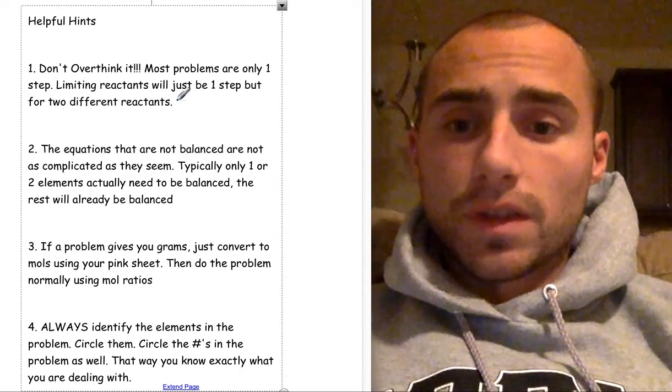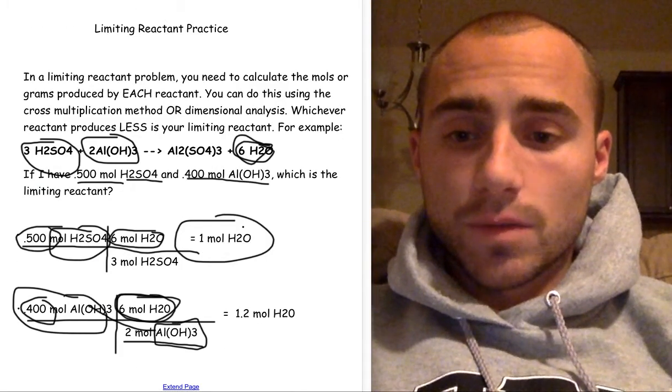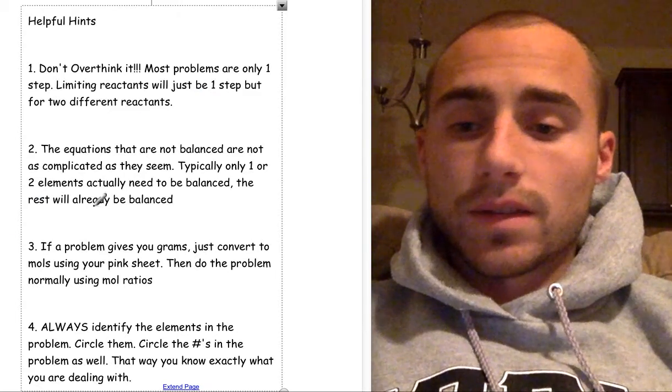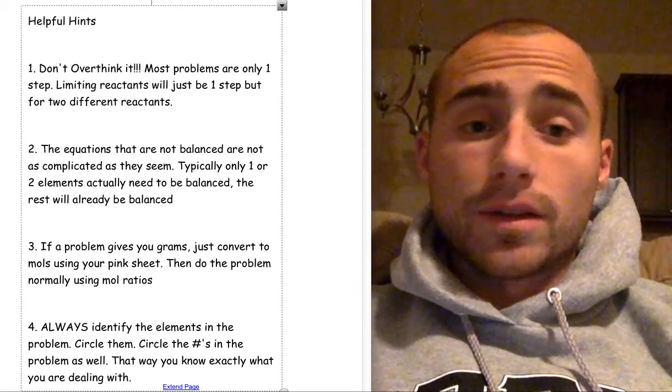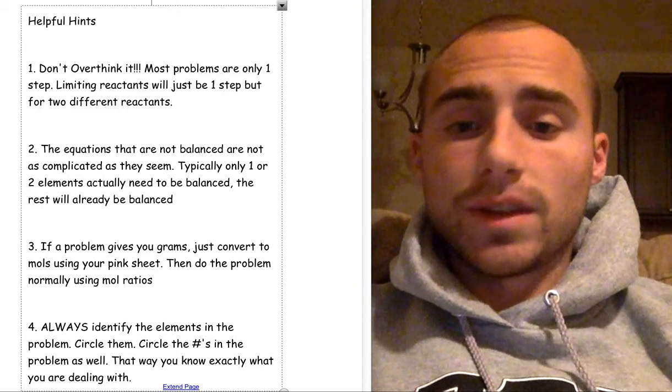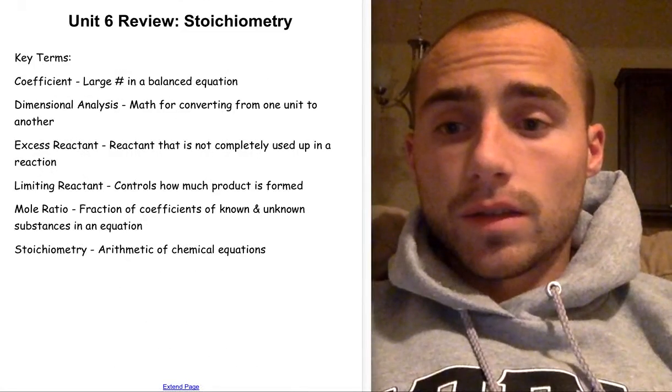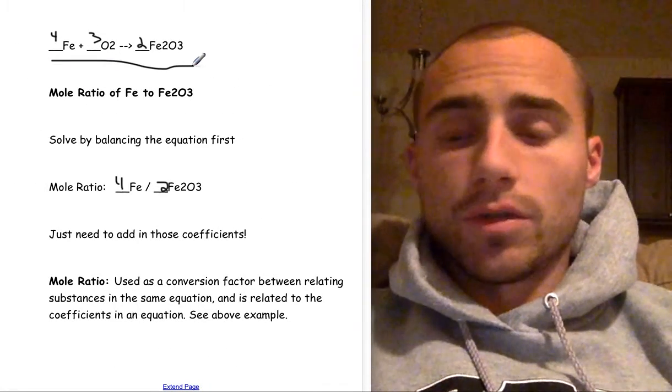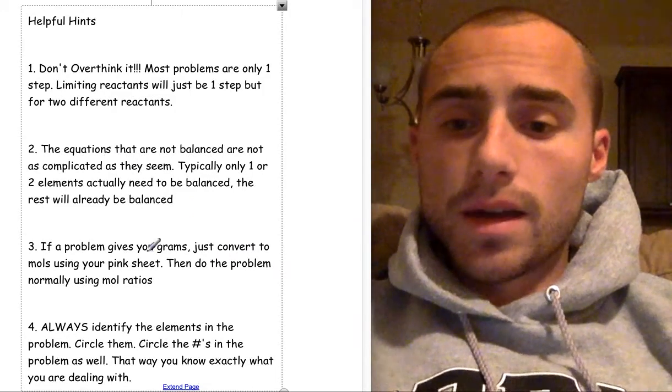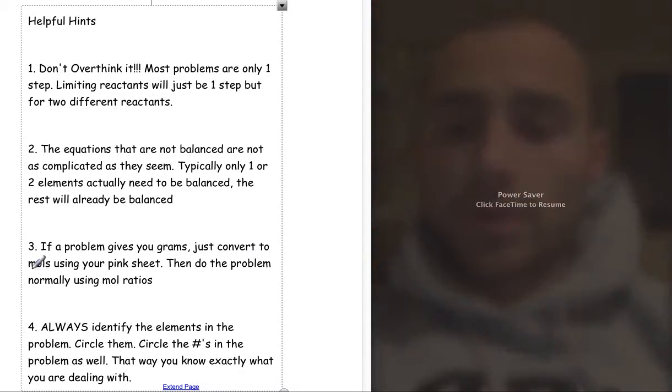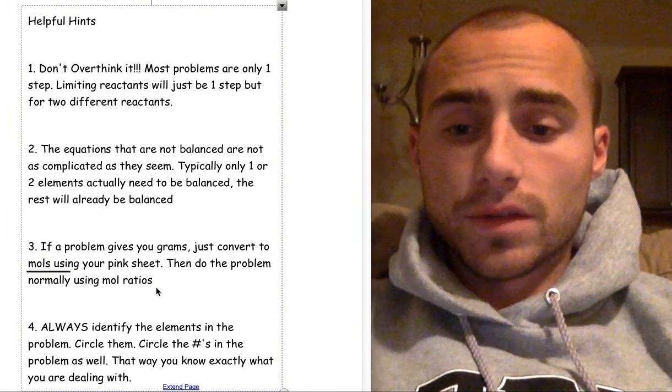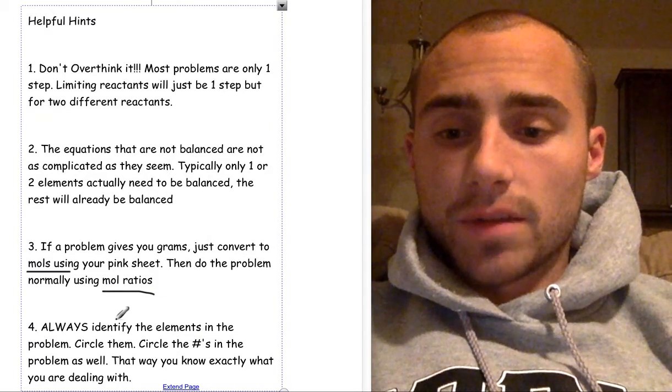Okay, some final helpful hints. Don't overthink it. Most problems are only one step, like this. You can see it's just one step. Limiting reactants will be one step, but two different reactants, like that. The equations that are not balanced on this test are not as complicated as they seem. Typically, only one or two elements actually need to be balanced. The rest will already be balanced. You'll have one like this on your test. That's the only one where everything needs a new number instead of just a one. If a problem gives you grams, just convert to moles using your pink sheet. Always convert to moles first, then do the problem using mole ratios.